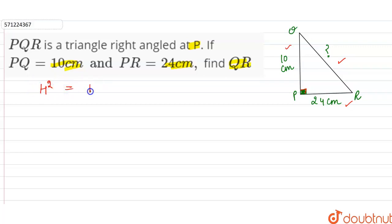So here the hypotenuse is QR, so QR square will be equal to perpendicular PQ square plus base PR square. Now we have to find QR, so QR square is equal to PQ square plus PR square.